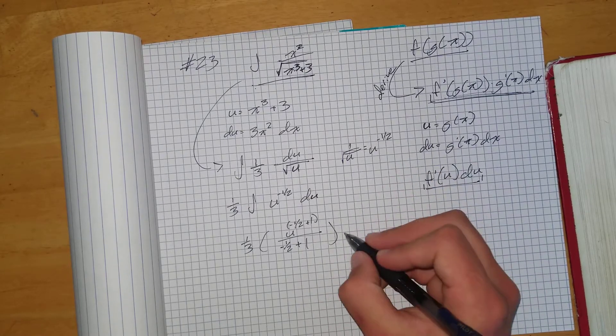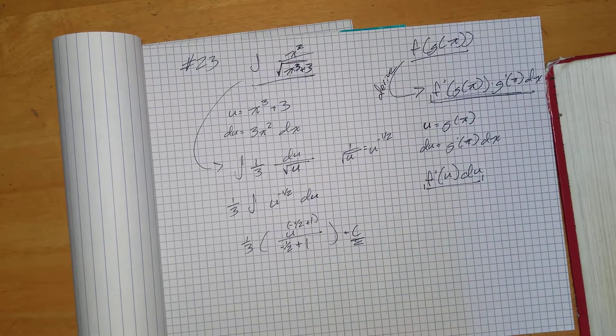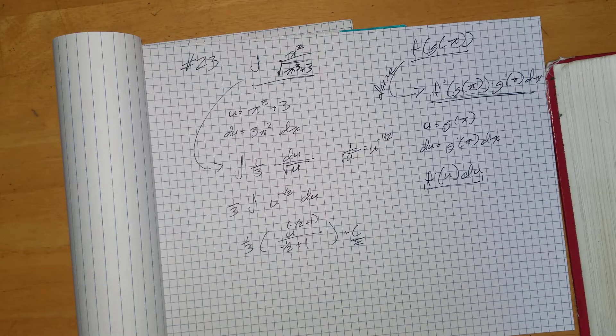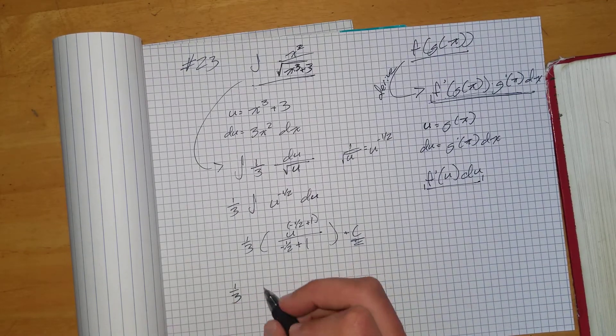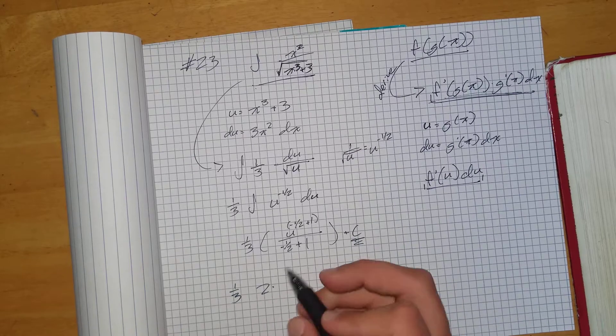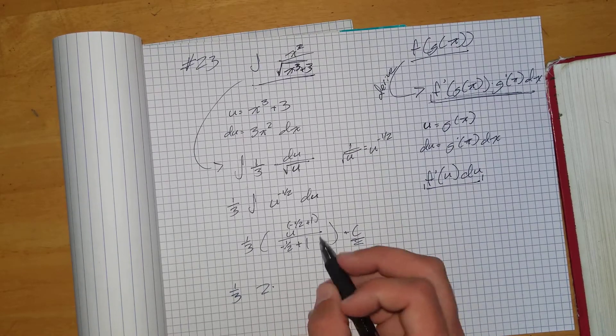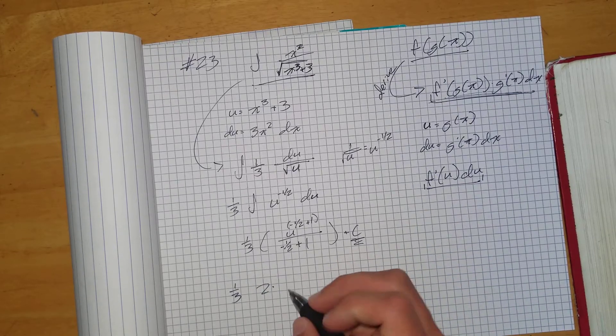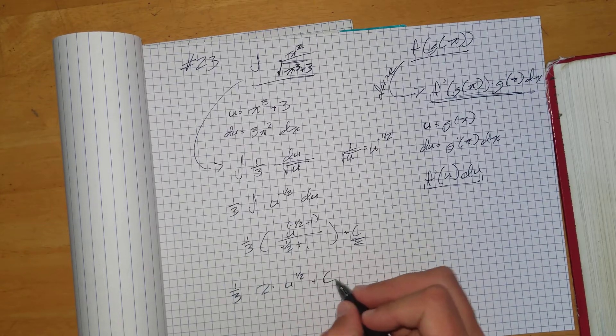Remember to do this. This is important. So now we just simplify, right? 1 third, 2. So negative 1 half plus 1 is just 1 half. And when you divide by 1 half, it's just multiplying by 2. And then u to the 1 half plus c.